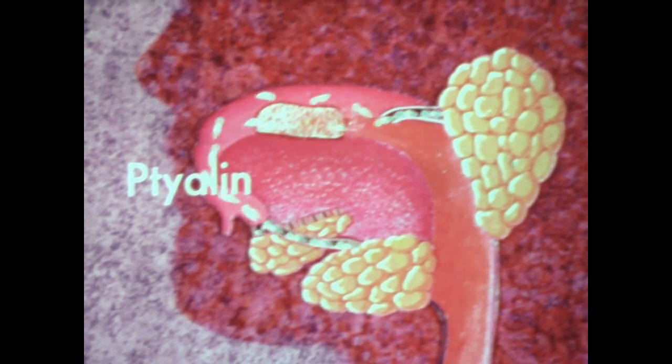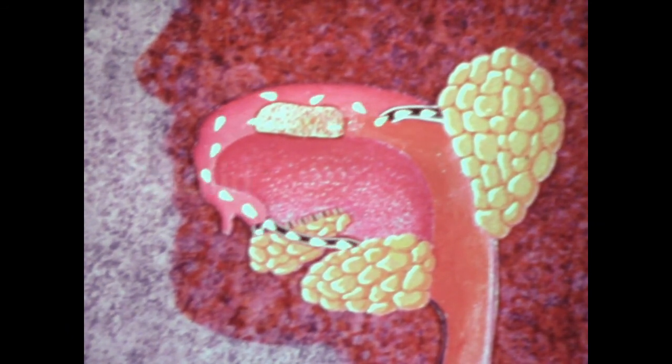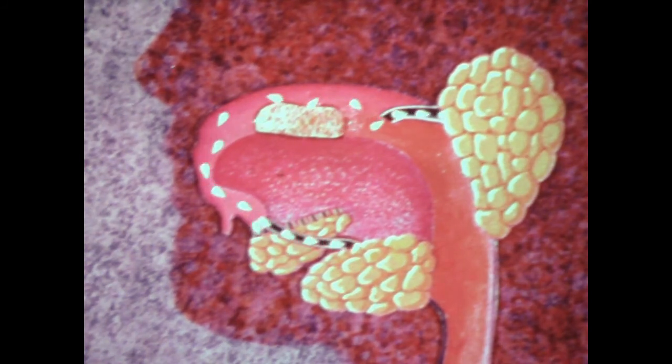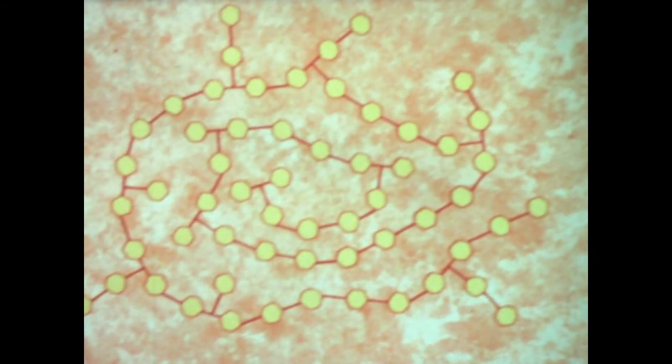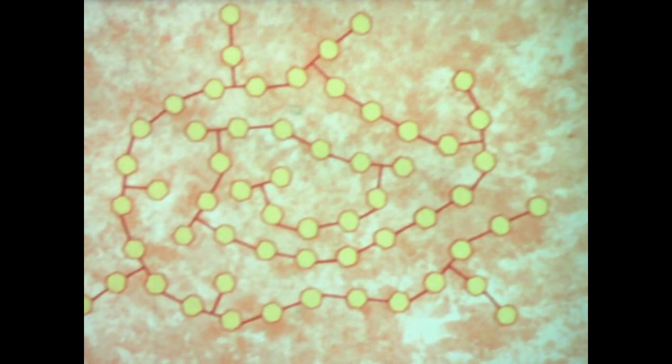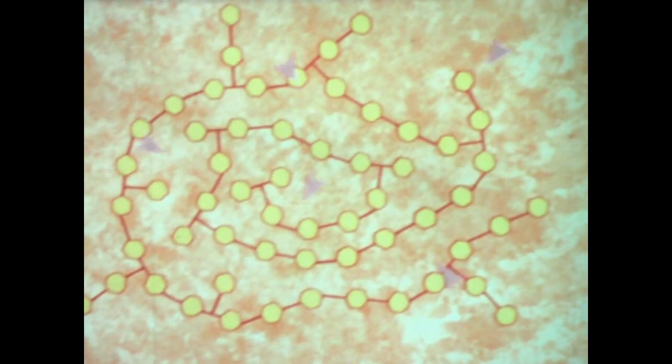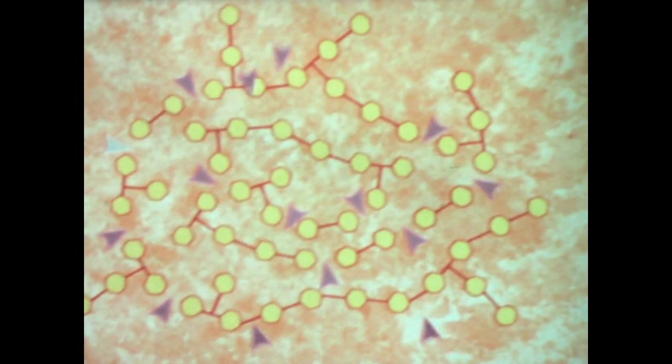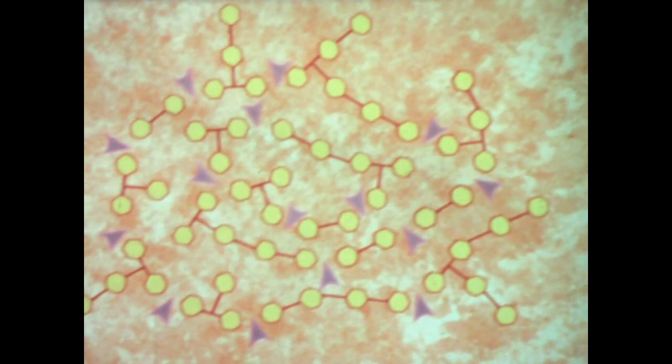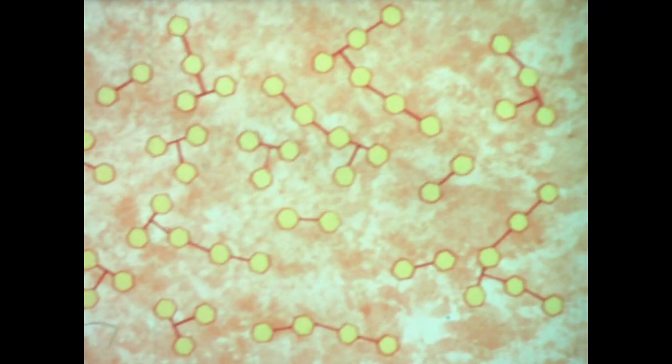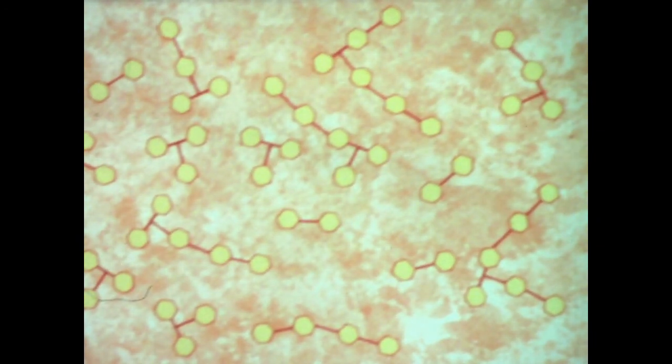Tyolin is the enzyme that begins the digestion of starch molecules. Since the chemical breakdown of food cannot be observed directly, we'll use symbols to represent the digestion of starch. As tyolin comes into contact with a molecule of starch, some of the chemical bonds that hold the molecule together are broken. In this way, a molecule of starch is broken down into smaller molecules known as sugars.